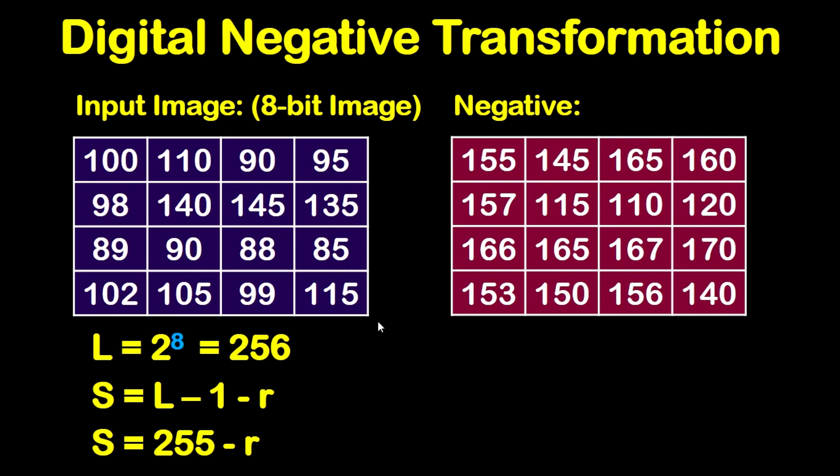Now for the second pixel, again 255 minus the original pixel which is 110, this will give you 145. For this pixel, 255 minus the original pixel which is 90, this will give you 165 like this. And so on for the other pixels.